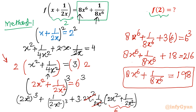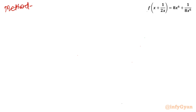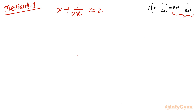Once you know you have to multiply by 2, that is the key moment of this solution. Now Method 2 — the conventional, general method. I will again consider x + 1/2x = 2 and target evaluating 8x⁶ + 1/8x⁶. Let's frame a quadratic equation by multiplying through by 2x, giving 2x² + 1 = 4x.